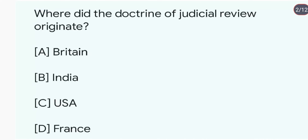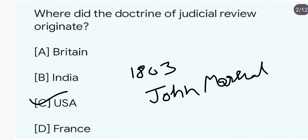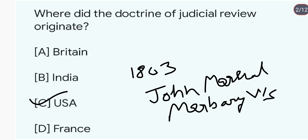Where did the Doctrine of Judicial Review originate? The Doctrine of Judicial Review originated in the U.S.A. The answer is C. In 1803, his name was John Marshall. Judicial Review as a doctrine was developed in the U.S.A. in 1803 by John Marshall, the Chief Justice of the American Supreme Court. The case in which it was given was Marbury v. Madison.